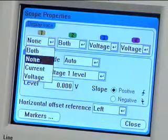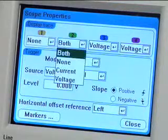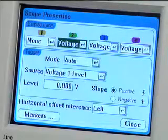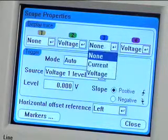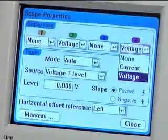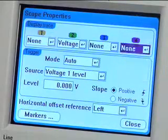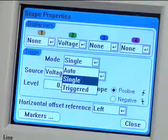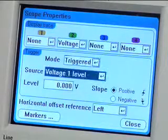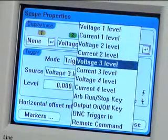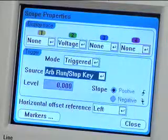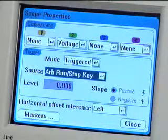Press Properties to configure the scope measurement. Select View of Voltage on Channel 2. Since this is a non-repetitive waveform, set the trigger mode to Triggered. Select the trigger source to trigger when you press the ARB Run-Stop key. With an integrated instrument, it is very easy to configure the trigger source as when you start the waveform by pressing the ARB Run button.